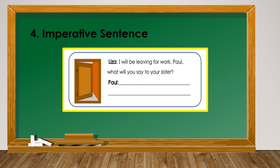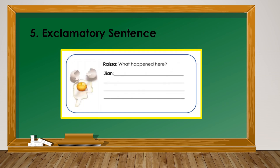Number 4: Write an imperative sentence. 'Iza, I will be leaving for work.' Paul, what will you say to your sister? Write your sentence now. Good job! I know you were able to write a great sentence. Number 5: Write an exclamatory sentence. Riza, what happened here according to the picture? Write your sentence now. Great! I know that you were able to write a good sentence.